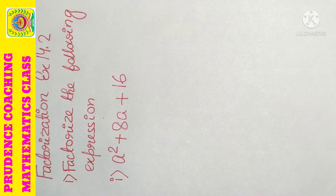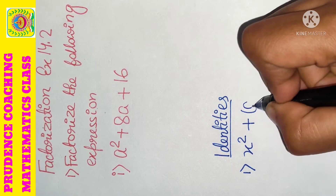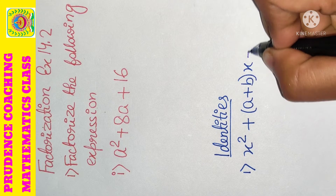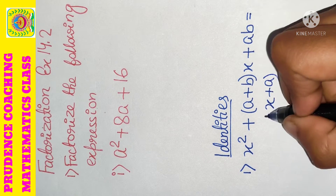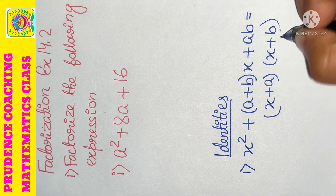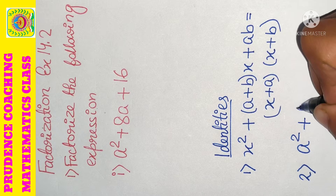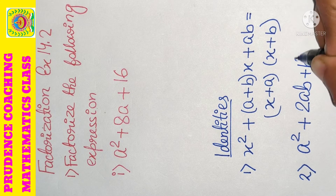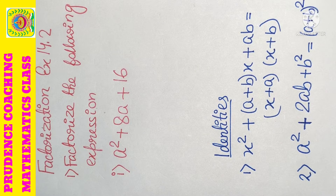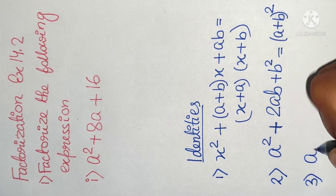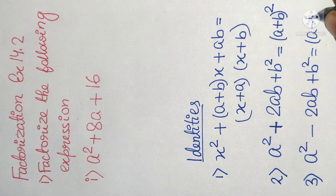So let us learn those three identities first. First identity: x² + (a + b)x + ab is written as (x + a)(x + b). Second identity: a² + 2ab + b² = (a + b)². Third identity: a² - 2ab + b² = (a - b)².